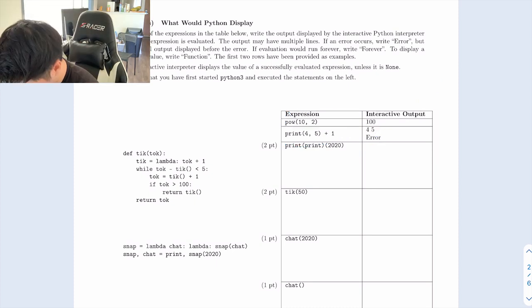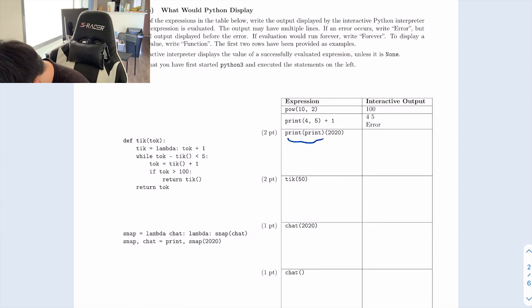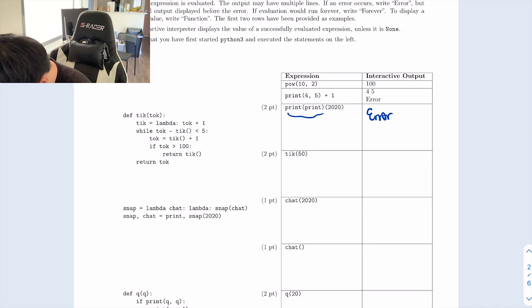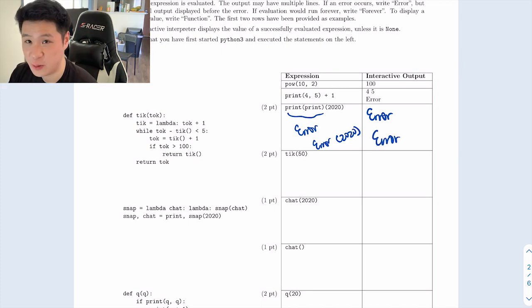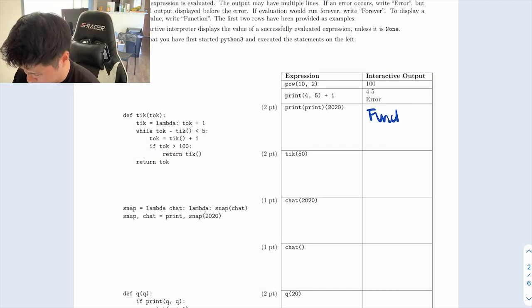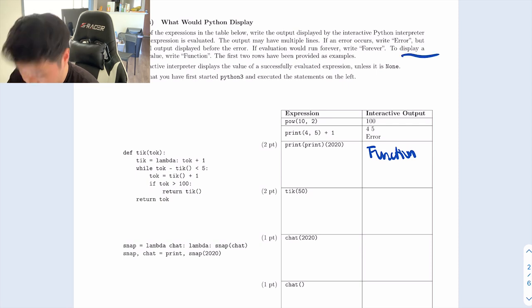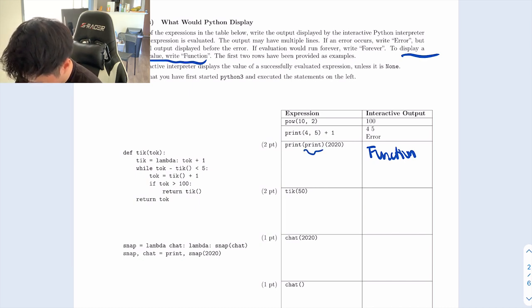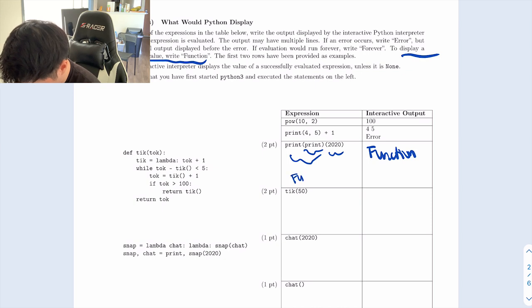Now: print(print(2020)). Going left to right, if you print a print, I think you get a function displayed. What do you get returned from a print? I initially thought error, but actually — if we print what print literally is, it shows 'function.' So we print the value of what print is, which is a function, and after that we call the result with 2020. So we're actually printing 2020. I think that's the actual answer.